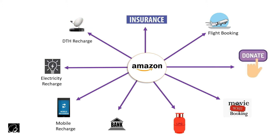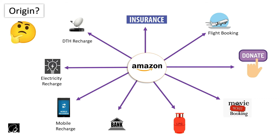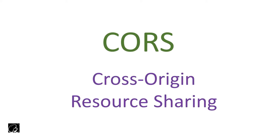From this you can understand that Amazon will use third-party APIs to talk to those third-party servers to integrate those features. This is a situation where you have to talk to some third-party server which is of a different origin. That is where a concept called CORS comes into the picture — CORS stands for Cross-Origin Resource Sharing.